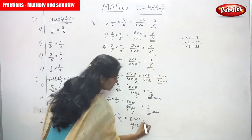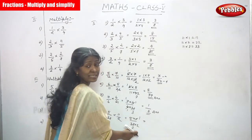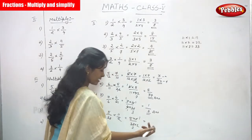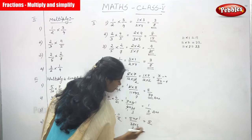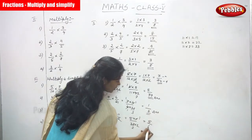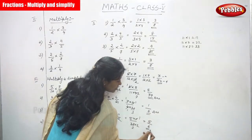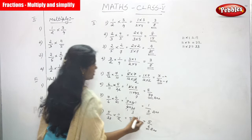Now 5 and 2 — 5 is an odd number and 2 is an even number, so you can't cross-cancel them. So 5 × 1 = 5 in the numerator and 3 × 2 = 6 in the denominator. The answer is 5/6.